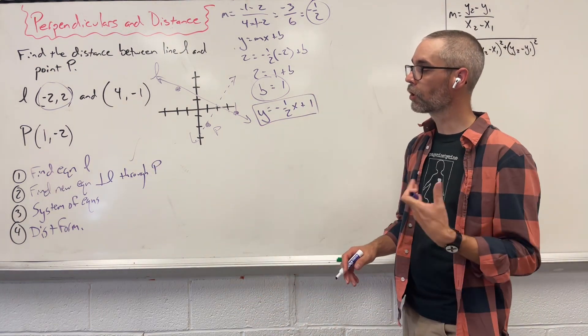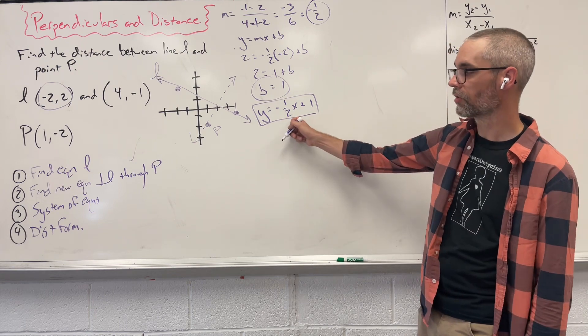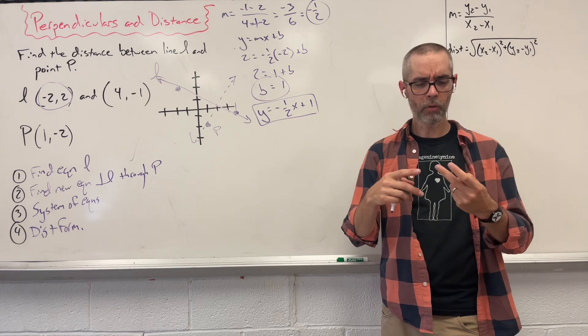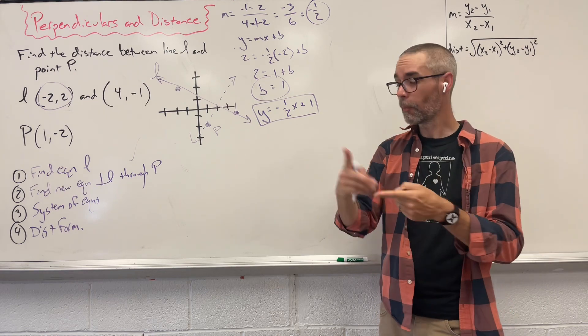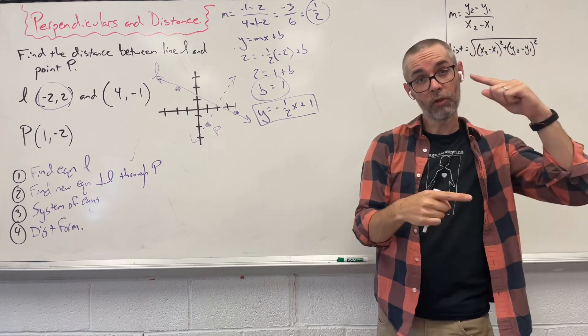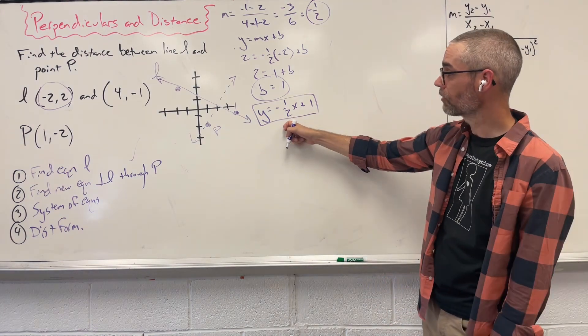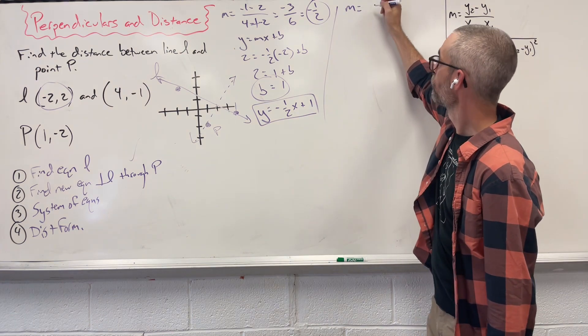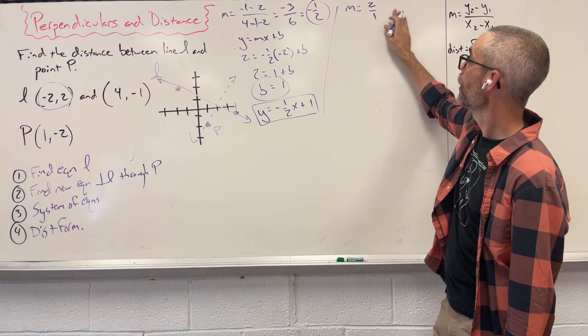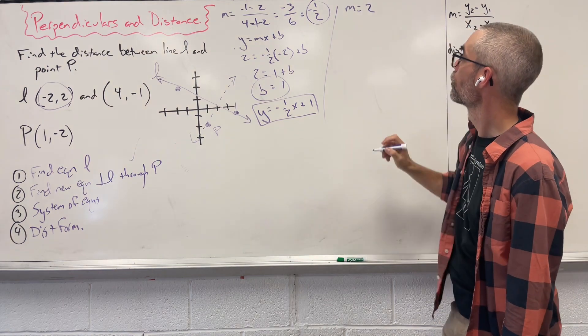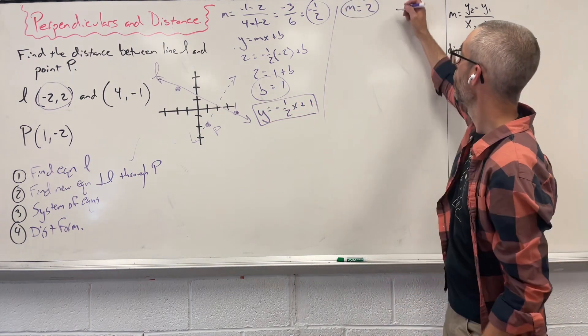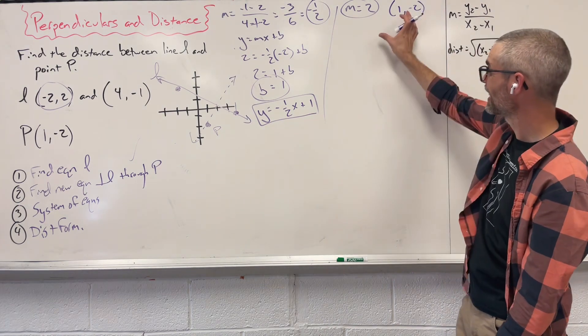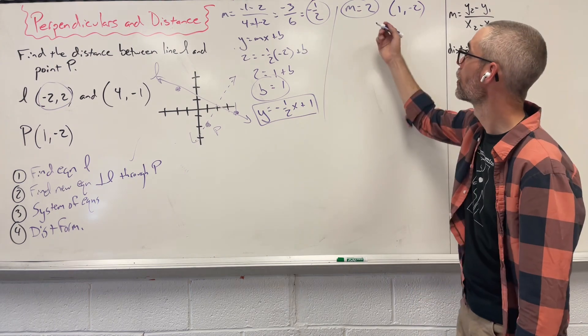Step 2. Find a new equation perpendicular to this, and it goes through that point. So, perpendicular. What we know about slopes is there's going to be two main changes, opposite, positive, negative, and reciprocal. So, you're taking that fraction and you're flipping it. So, I have a slope of negative 1 half. My new slope is going to be a positive 2 over 1 or just 2. We need that. We have a point of 1 comma negative 2.